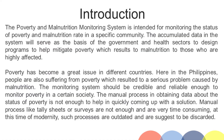The Poverty and Malnutrition Monitoring System is intended for monitoring the status of poverty and malnutrition rate in a specific community. The accumulated data in the system will serve as the basis of the government and health sectors to design programs to help mitigate poverty, which results in malnutrition for those who are highly affected.